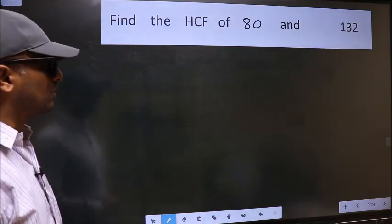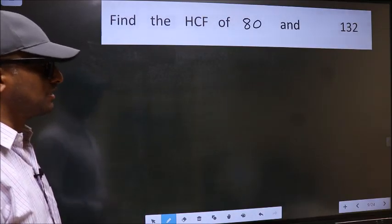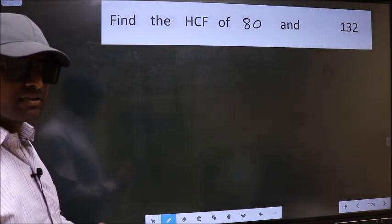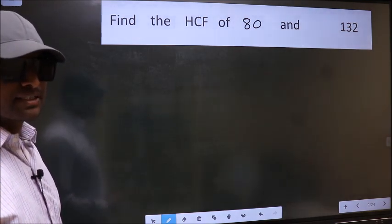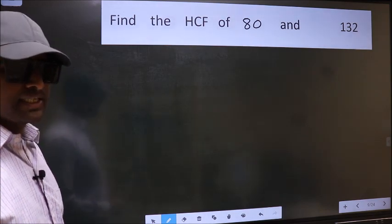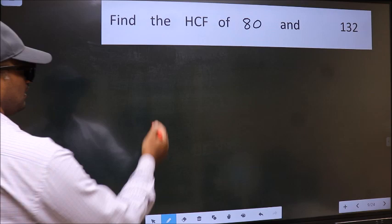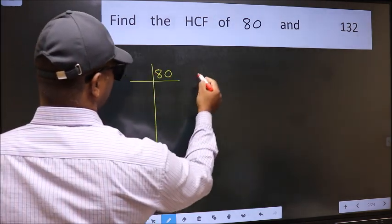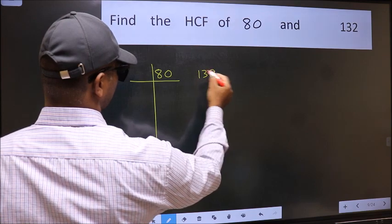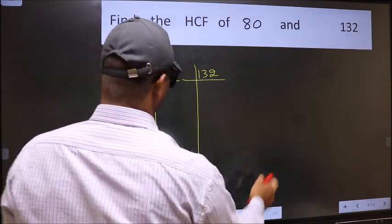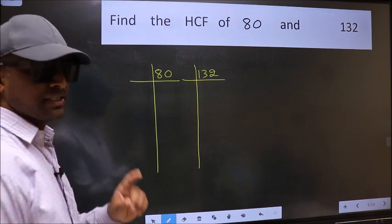Find the HCF of 80 and 132. To find the HCF, we should do the prime factorization of each number separately. What I mean is, write 80 and 132. This is your step 1.